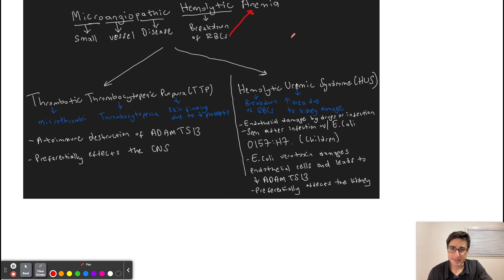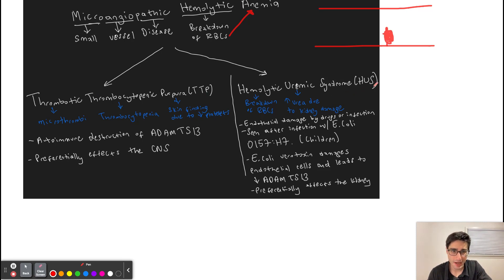In this disorder there's basically going to be a formation of microthrombi, and this microthrombi can be formed by two disorders — either TTP or HUS, which we're going to discuss shortly. Because this microthrombi is formed, it is going to consume platelets. So we're basically using our platelets to form this microthrombi, and as a result patients are going to have low platelet numbers in their blood work.